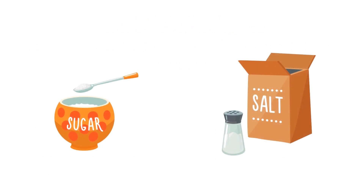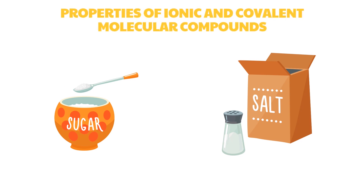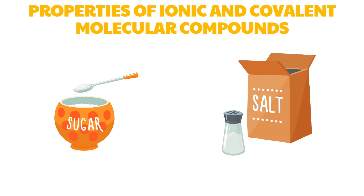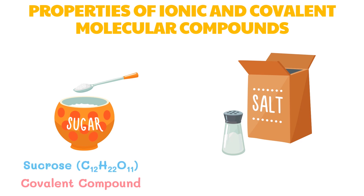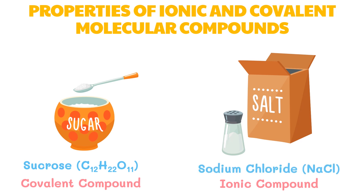When sugar and table salt are placed side by side, they may appear the same because they are both white crystalline solids. We all know that table salt tastes salty and sugar tastes sweet — these properties suggest that they are very different substances. Sugar is a covalent molecular compound made up of sucrose molecules, while table salt is an ionic compound made up of sodium chloride ions. How exactly are ionic and covalent bonds different from each other?